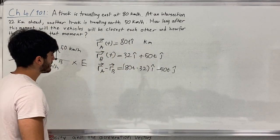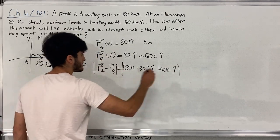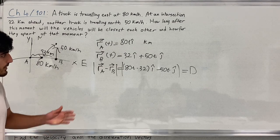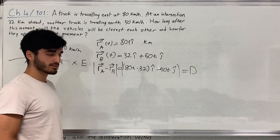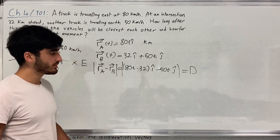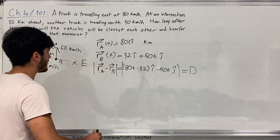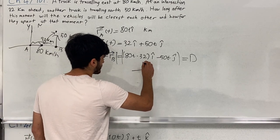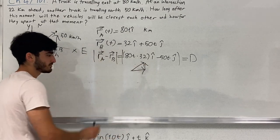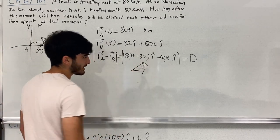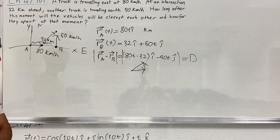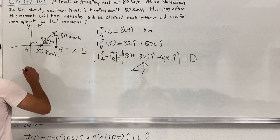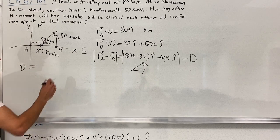To find when the minimum distance occurs, I take the magnitude of (RA − RB) to get the distance D. To avoid dealing with the square root when differentiating, I work with D² instead. So D² = (8t − 32)² + (−50t)². I want to minimize D, which is equivalent to minimizing D².